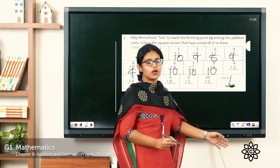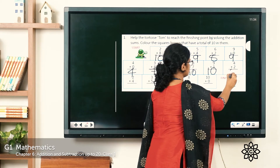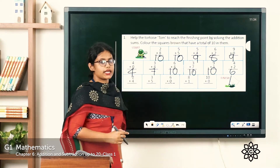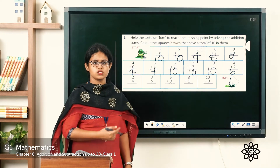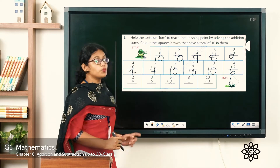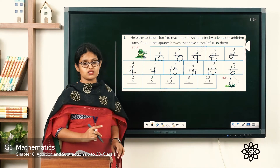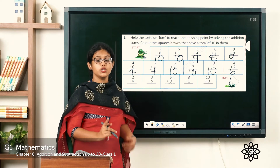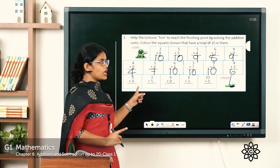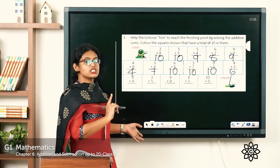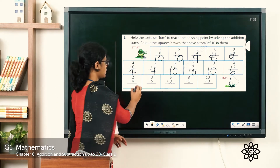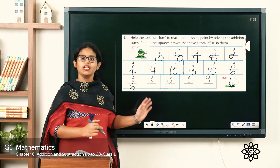Next, 4 plus 2 equals 6. Then 2 plus 4 — did you notice something similar? In addition, even if you change the order of numbers, you get the same answer. So 4 plus 2 and 2 plus 4 are the same — 2 plus 4 also equals 6.